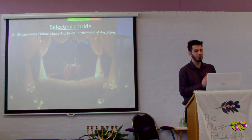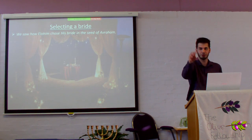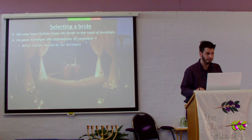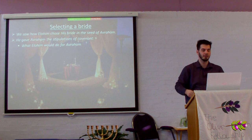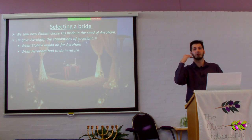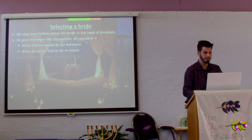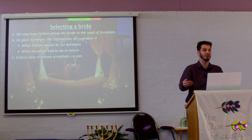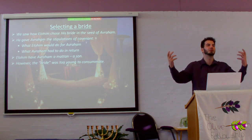We saw how Elohim chose his bride in the seed of Avraham very early on — this was the shidduchin, 'I choose you.' He gave Avraham the stipulations of the covenant: what Elohim would do for Avraham — give him land, make his descendants like the sand of the sea and the stars of the sky — and he gave Avraham what he wanted in return: to walk before him and be perfect, to have integrity. Elohim gave Avraham a matan, a gift of a son in his old age. However, the bride was too young to consummate; she hadn't reached maturity.